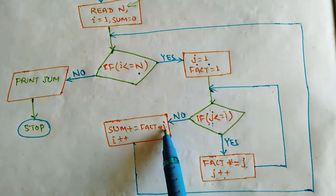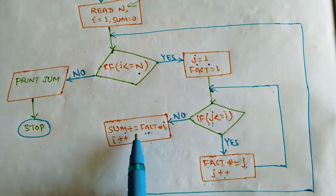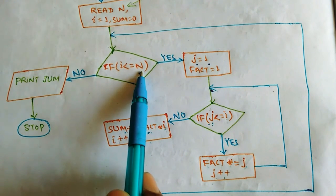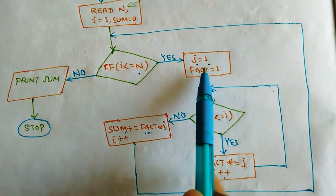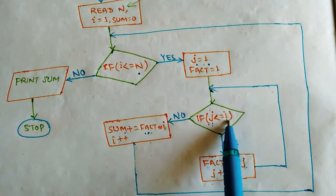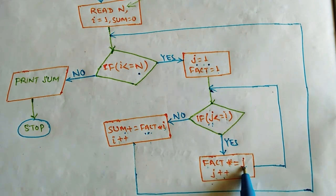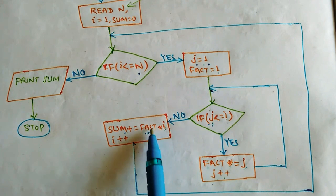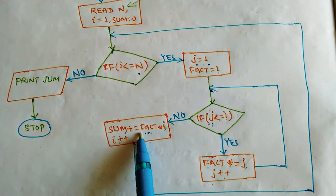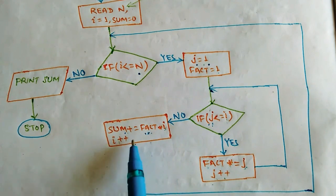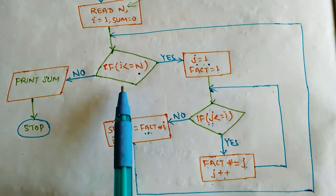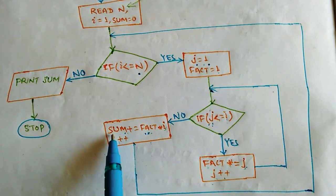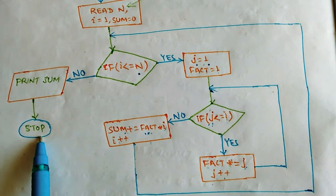The inner loop condition becomes false, so we go to the No part. Sum was previously 1 factorial times 1. Now sum becomes 1 factorial times 1 plus 2 factorial times 2. Then i goes to 3, and 3 is less than or equal to 4, so we continue. j goes up to 3, giving 3 factorial. Then 3 factorial times 3 is added. Similarly, i goes to 4, executes, and finally when i becomes 5 the outer loop condition is false. We go to the No part and print sum — which contains 1 factorial times 1, 2 factorial times 2, and so on. Finally it stops.